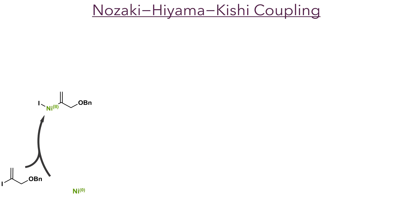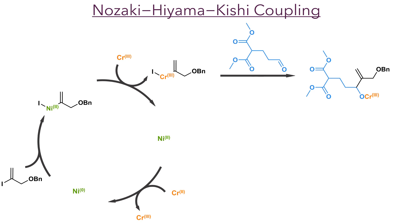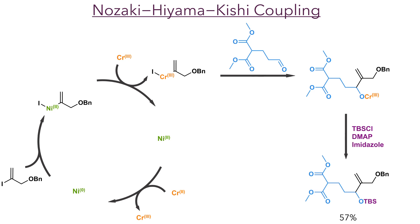The first reaction of the synthesis was a Nozaki-Hiyama-Kishi coupling. Nickel(0) first undergoes oxidative addition into an alkenyl iodide, and this then undergoes transmetalation with the chromium(3) species. The nickel(2) species produced is then reduced by reaction with chromium(2). The organochromium species generated undergoes nucleophilic addition into an aldehyde generating a chromium alkoxide species. This was then silylated in situ using TBS chloride, DMAP, and imidazole to produce the target compound in a 57% yield.